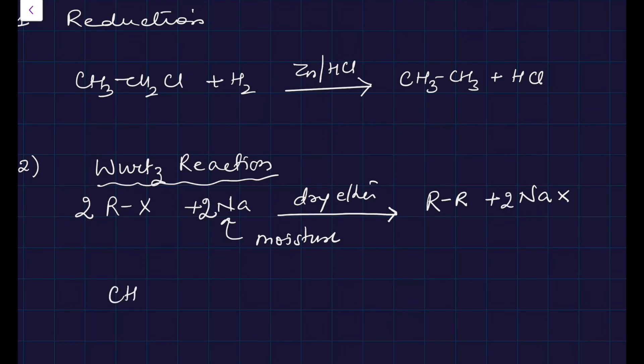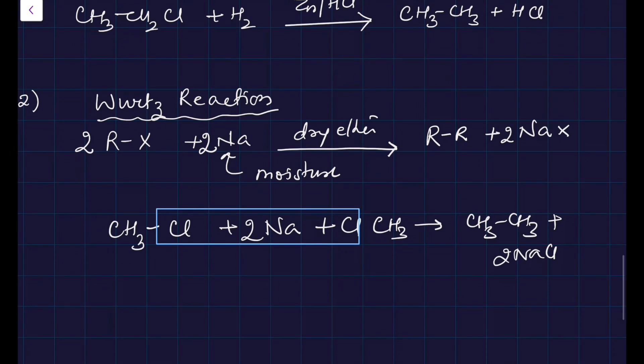I'll explain how to write this reaction. If you want to balance it, you can write 2 here and 2 NaCl here. Suppose you take CH3Cl, add Na. You write CH3Cl on one side, take Na, remove NaCl, and you get CH3-CH3 as product plus 2 NaCl. Wurtz reaction is a very important reaction.